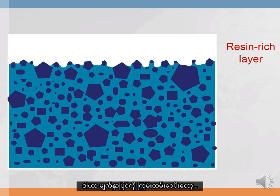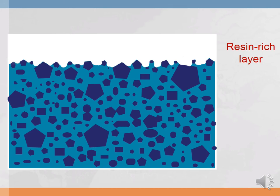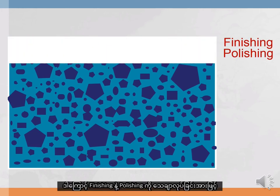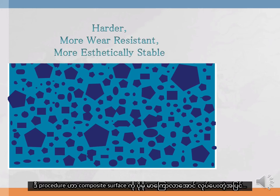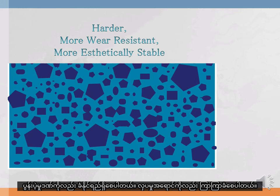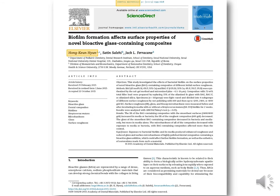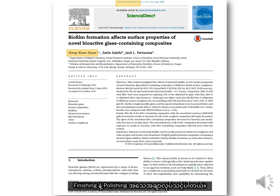Plaque can accumulate on a composite surface more easily as a result. Proper finishing and polishing procedures decrease surface roughness. The procedure can make the composite surface harder, more wear-resistant, and more aesthetically stable. Every composite restoration should be finished and polished in order to improve surface microhardness.